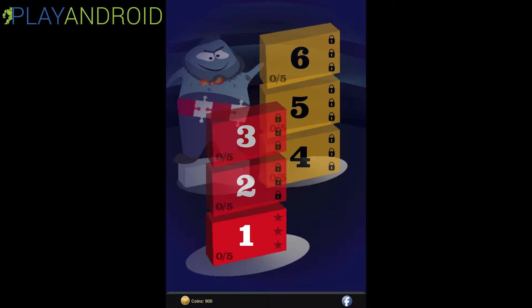And this is the starting screen. You have your six brackets here with five questions each, so it's 30 questions in total. You can choose the first one down here. You see the stars at the right and it's unlocked — all the others are locked, we have to unlock them first. You see coins at the bottom and a Facebook button on the right, so you can connect with Facebook, invite your friends, and share the game with them.